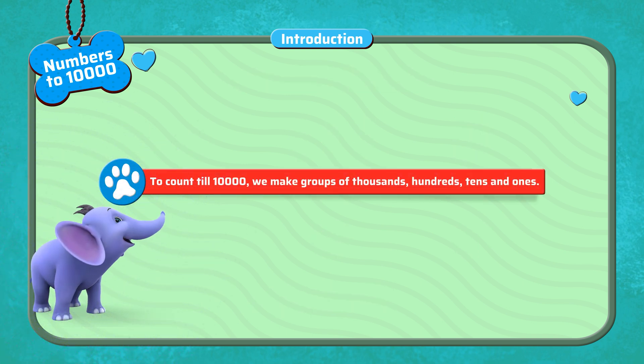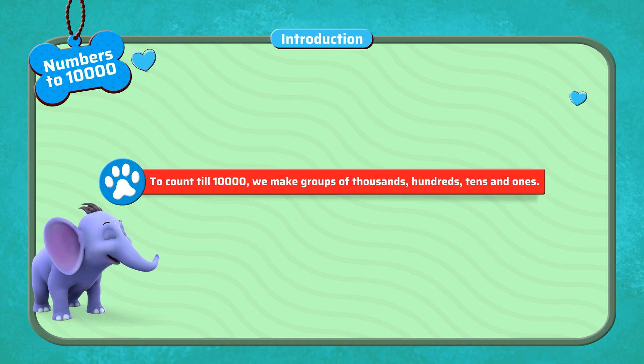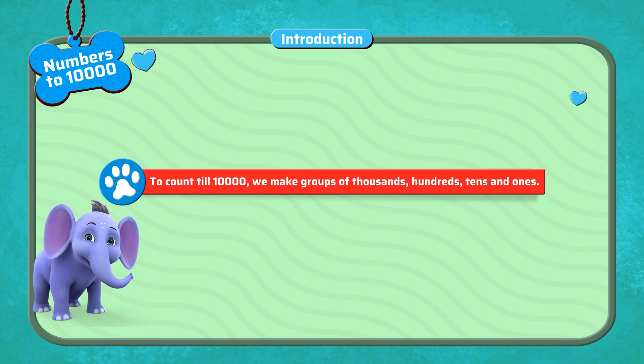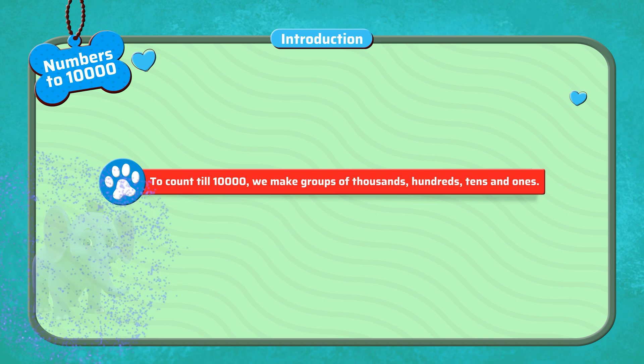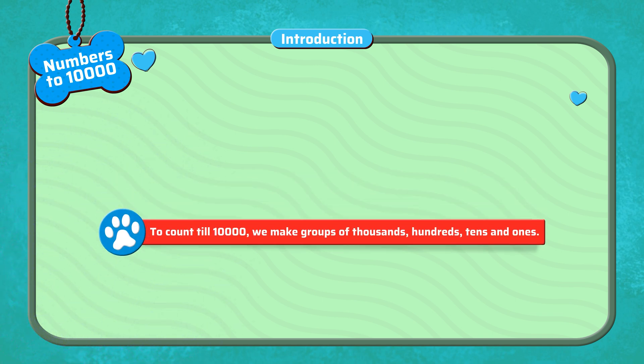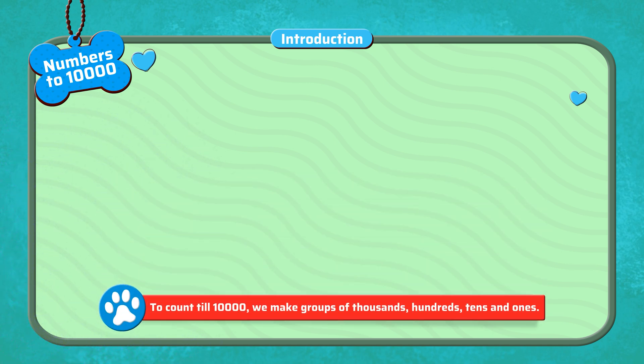To count till 10,000, we make groups of thousands, hundreds, tens, and ones. Let's see an example.